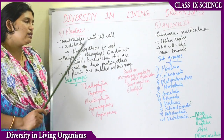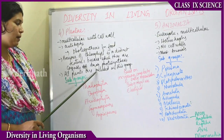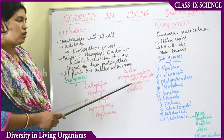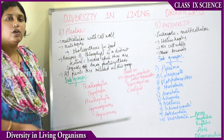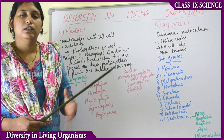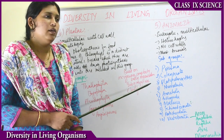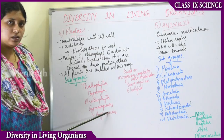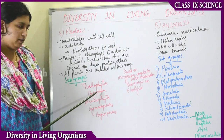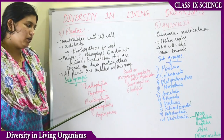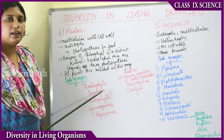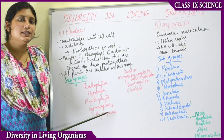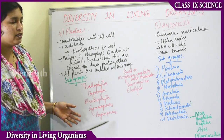All plants are included in the Plantae group. Plantae is further divided into five subgroups based on increasing complexity of body organization. These subgroups are Thallophyta, Bryophyta, Pteridophyta, Gymnosperms, and Angiosperms. We will be studying these five groups in detail later.